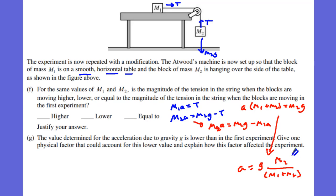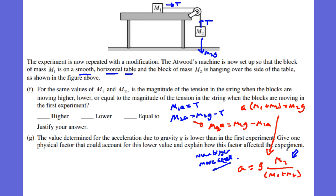Combining the two equations: M2A equals M2G minus M1A, so acceleration times (M1 plus M2) equals M2G. Therefore, acceleration equals G times M2 over (M1 plus M2). Compared to the original, the numerator is now just M2 instead of (M2 minus M1), so it's larger — meaning there's greater acceleration because M1 on the table is no longer pulling back.